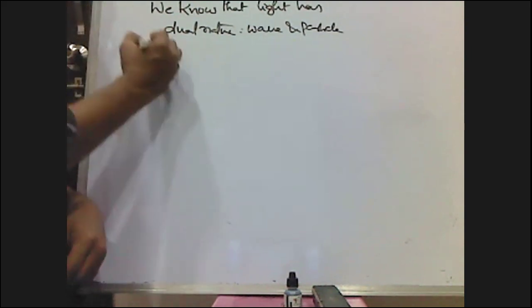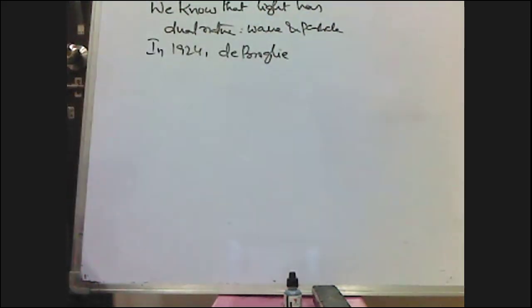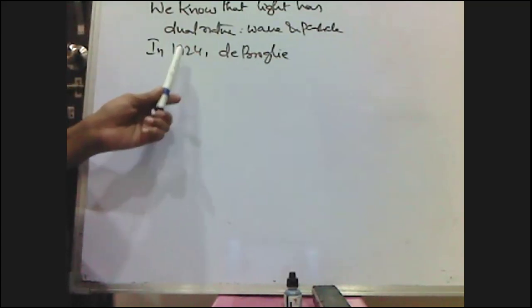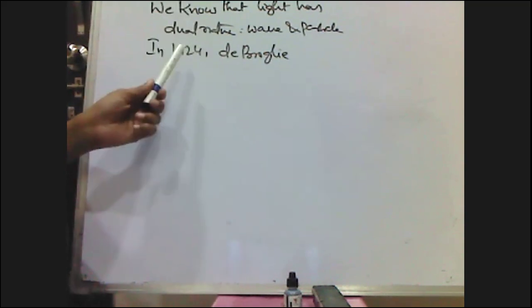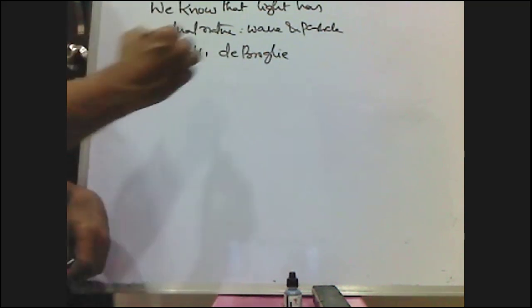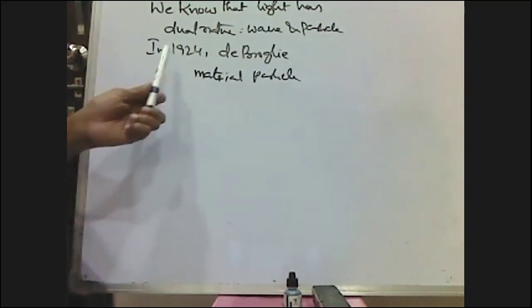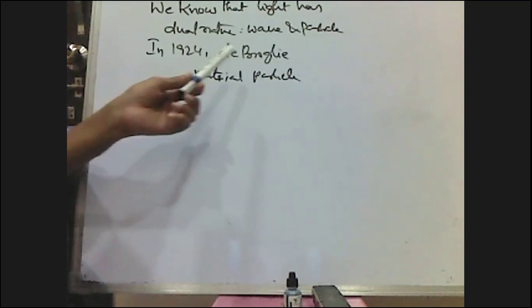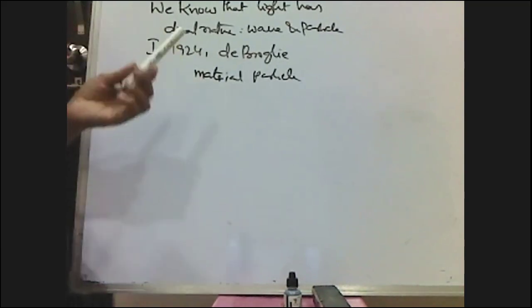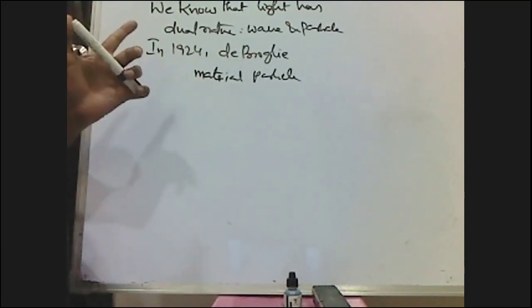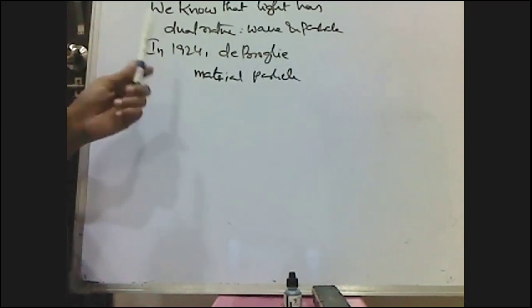In 1924, De Broglie proposed that an electron, like light, behaves both as a material particle and as a wave. That is, matter also shows dual nature — material particle nature as well as wave nature. So any matter, like particles such as electrons, shows dual nature: particle nature as well as wave nature.